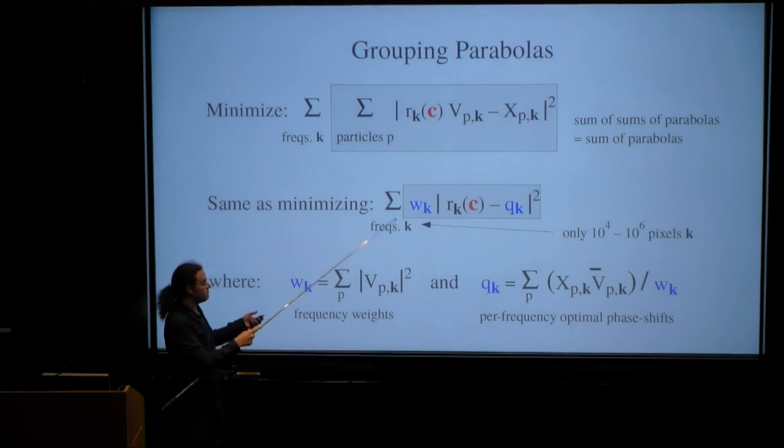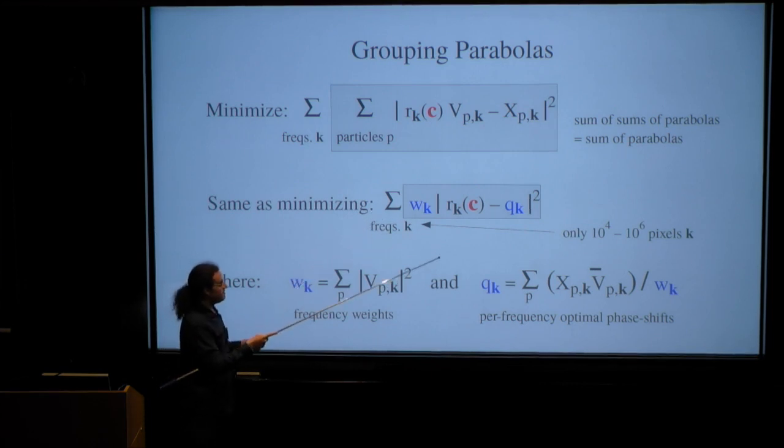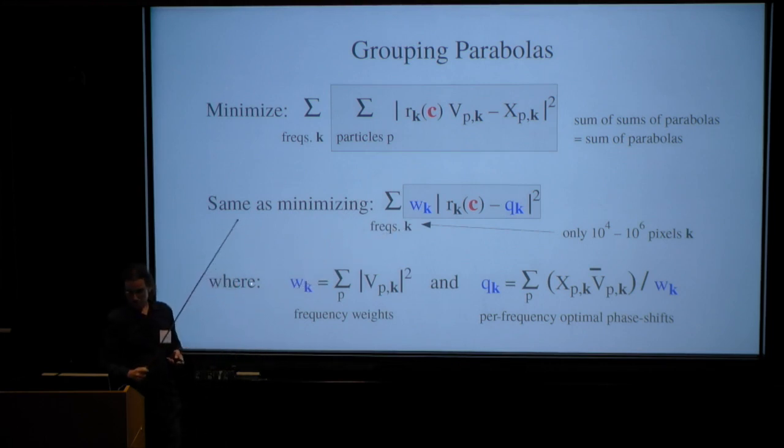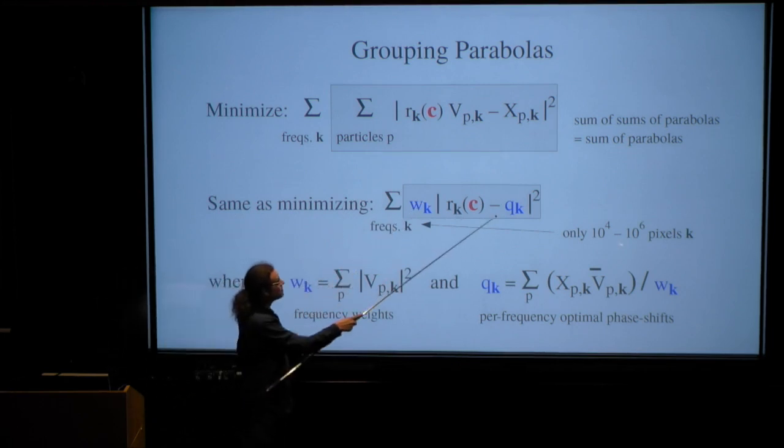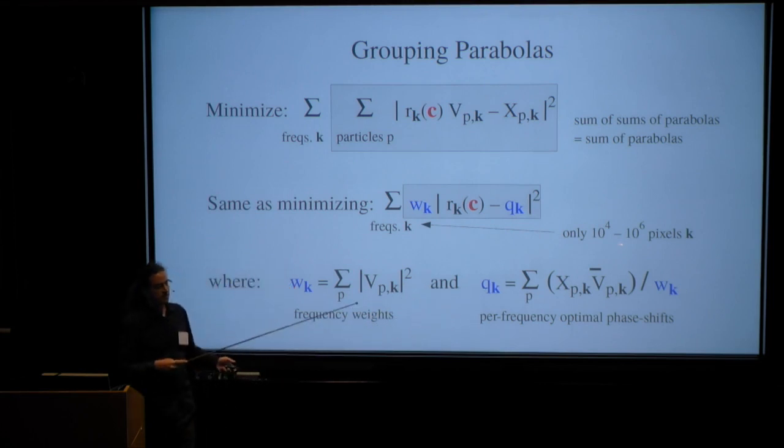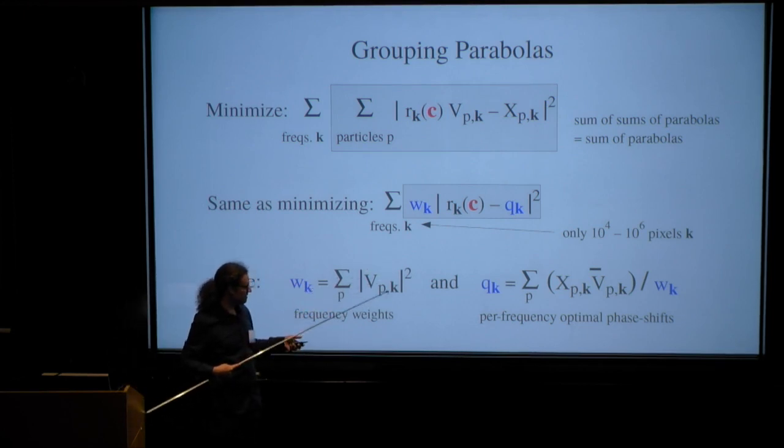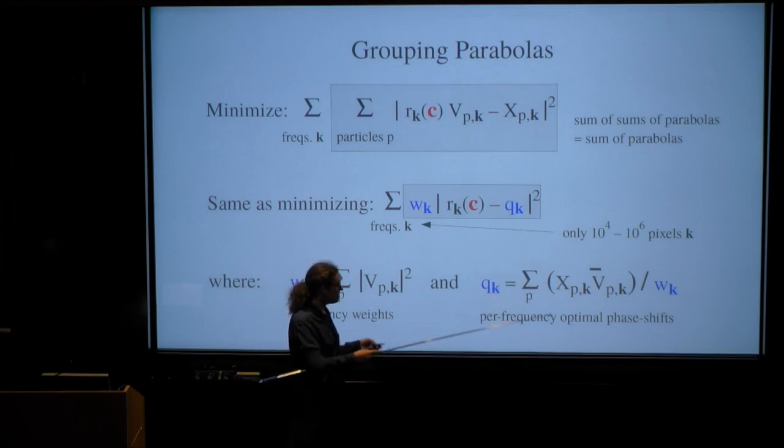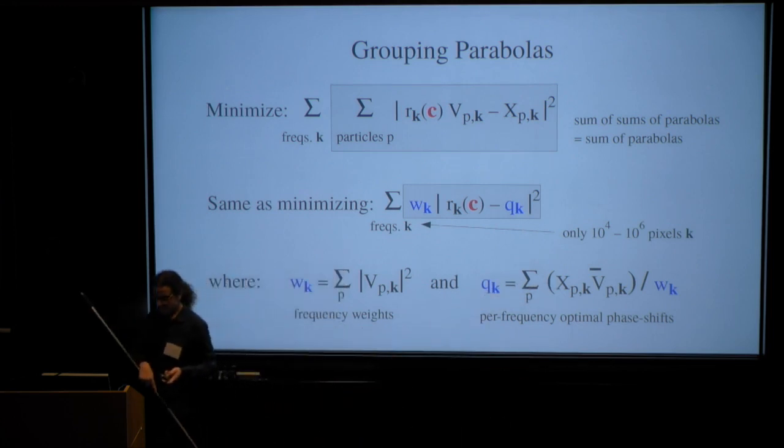And now when we minimize this over all the frequencies, this comes down trivially in fractions of a second, nonlinearly. It produces the same minimum as this here. It's not an approximation. And these numbers here, the blue ones, we can estimate or compute by just scanning through the data once. We load each particle from disk and make the corresponding prediction. For the weights, we just sum up the squared amplitudes and for the q, the correlations. And then we have it.